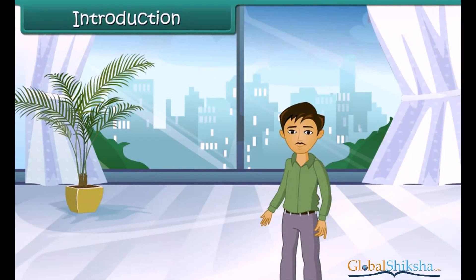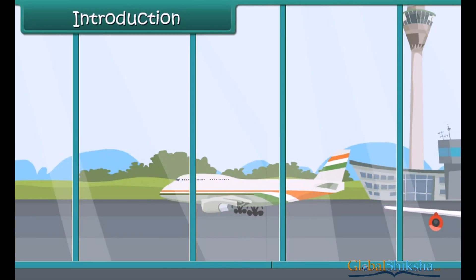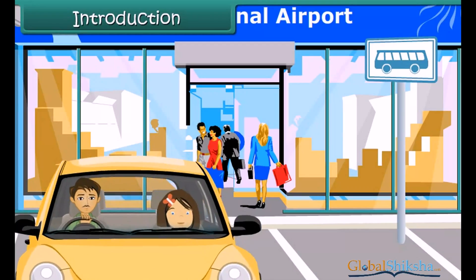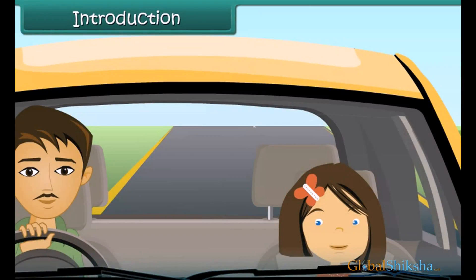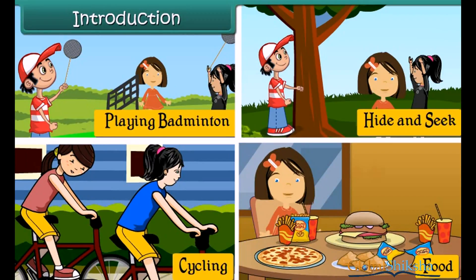Ira's uncle lives in London. He's come to India to meet his relatives and he's meeting Ira for the first time. He wants to know all about Ira — her friends, hobbies, and favourite food. In this lesson, you will learn to talk about yourself.